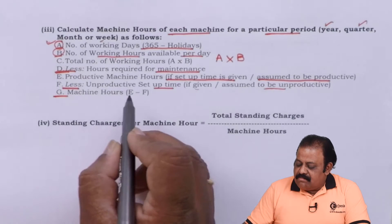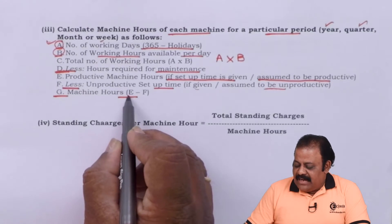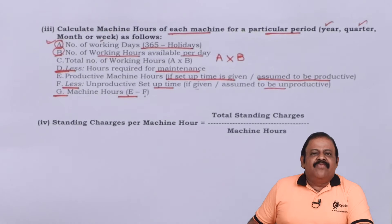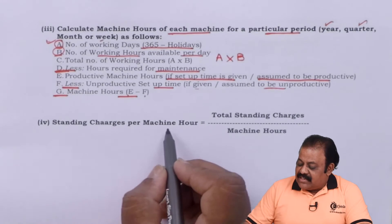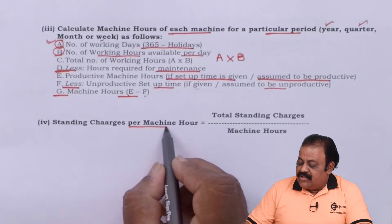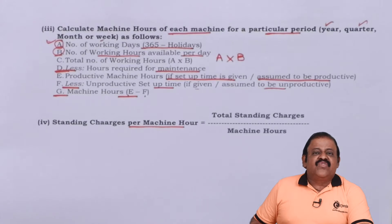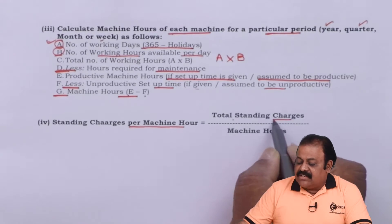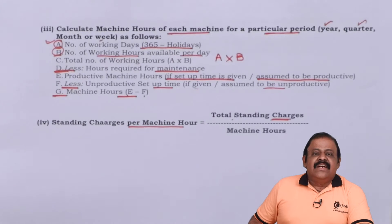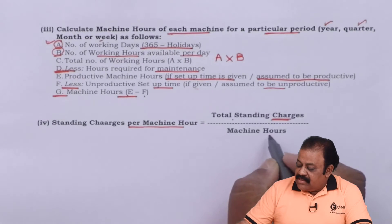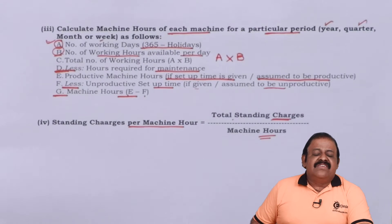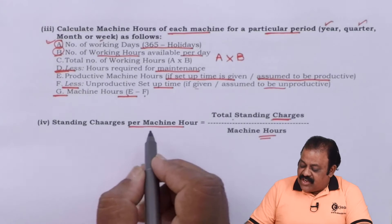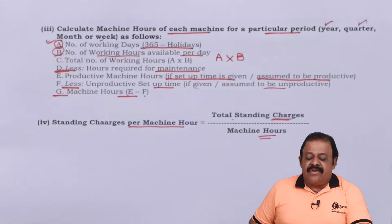Finally, we get machine hours (E minus F). Next, we calculate standing charges per machine hour using the formula: Total Standing Charges (total fixed cost) ÷ Total Number of Machine Hours (as calculated above) = Standing Charges per Machine Hour.